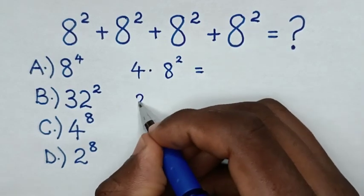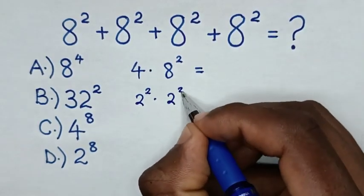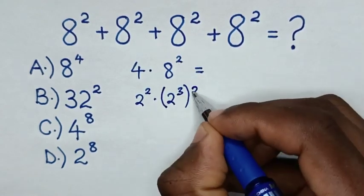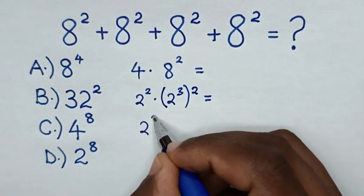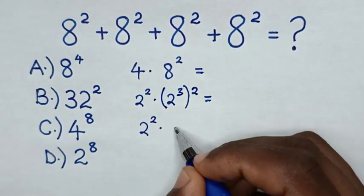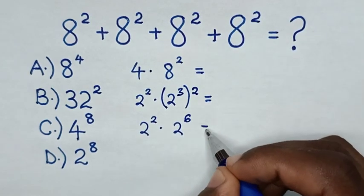4 is same as 2 power 2 times 8 is same as 2 power 3, then bracket power 2, is equal to this 2 power 2 times 2 power 3 times 2 is power 6. Then it will be equal to...